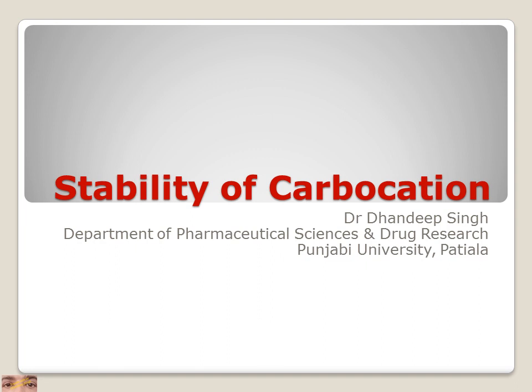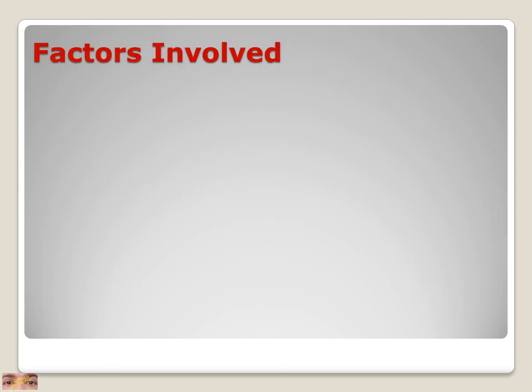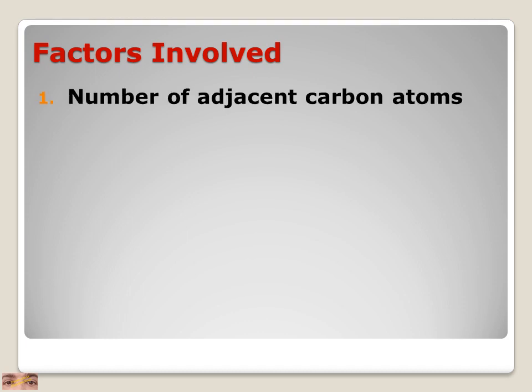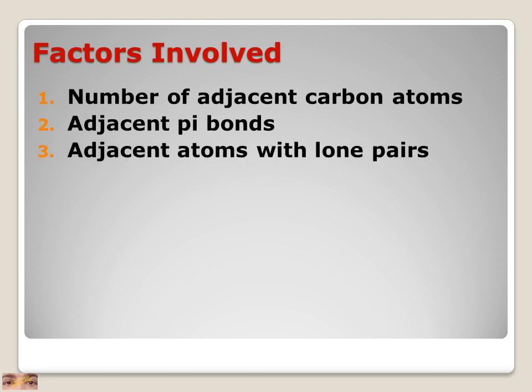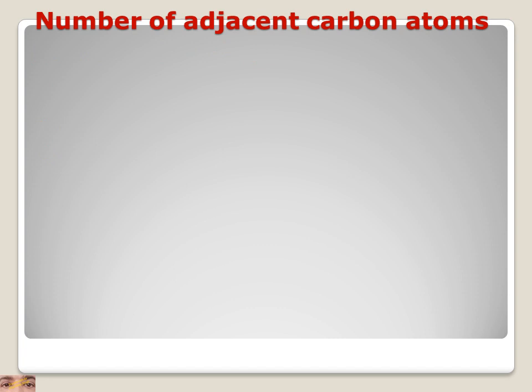Hello friends, today we are discussing the stability of carbocation. A carbocation is a carbon which is deficient in electrons — total six electrons are present and a positive charge is present on the carbocation. The factors involved in the stability of carbocation are: number of adjacent carbon atoms, adjacent pi bonds, and adjacent atoms with lone pairs.